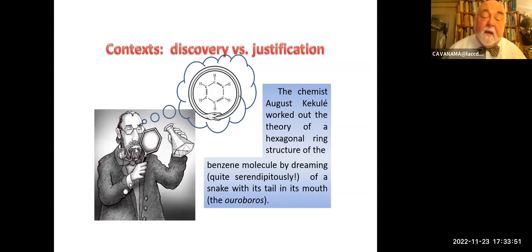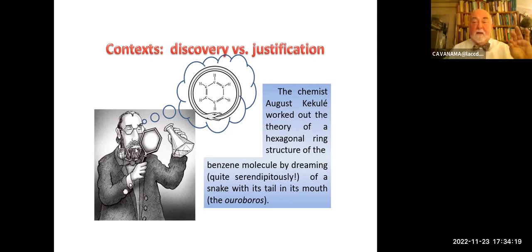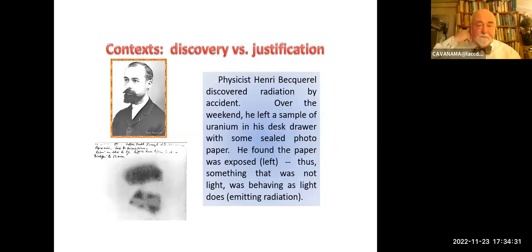Kekulé, the chemist, was trying to work out the theory of the structure of benzene. He had a dream about a snake with its tail in its mouth — the ouroboros — and he thought, 'Oh yeah, it goes around, it's a hexagon.' Completely wacky, irrational source — a dream. But that's OK. The dream itself didn't establish that benzene had that hexagonal ring structure; that had to be done in the context of justification. But the initial suggestion for the idea came from something quite different. And Becquerel discovered radiation by accident.